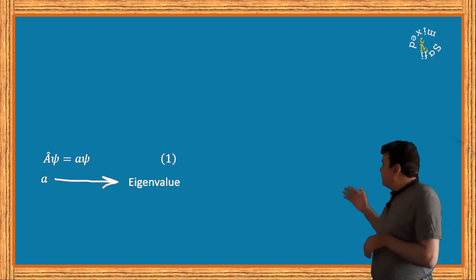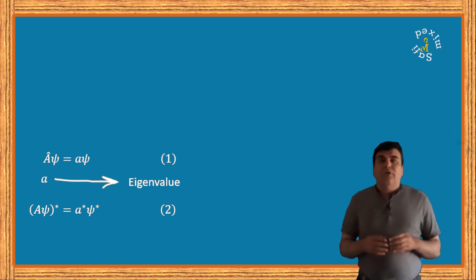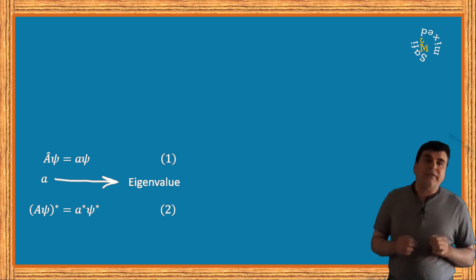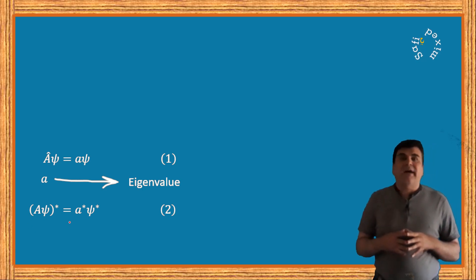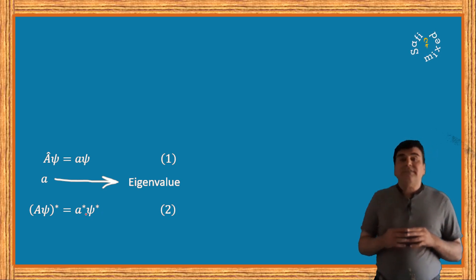If I take the complex conjugate of this equation I can write: the complex conjugate of Aψ equals the complex conjugate of eigenvalue a times the complex conjugate of ψ. Note that I have kept the left side inside brackets and have taken the conjugate as composite entity, whereas at the right side I have taken the complex conjugate of each quantity individually.